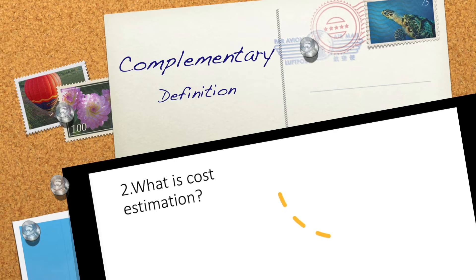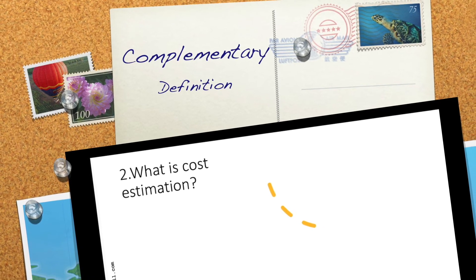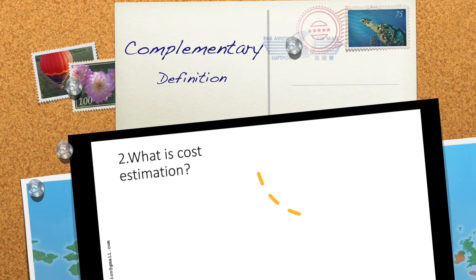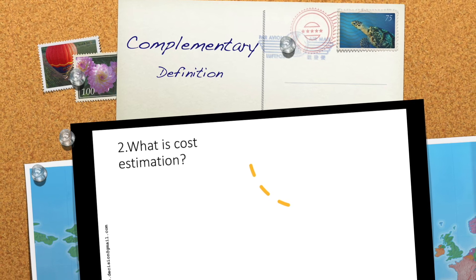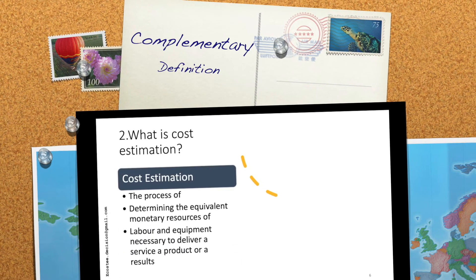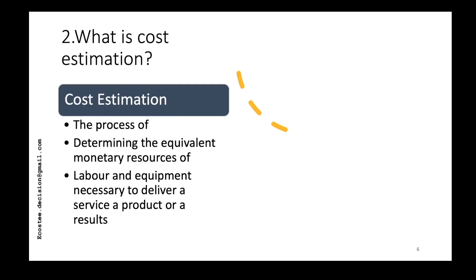Let me give you another definition of cost estimation so you better understand, in case you missed the first one or want it explained in different words. Cost estimation is a process of determining the equivalent monetary resources of three things: labor, equipment, and material.